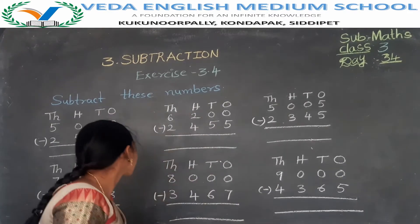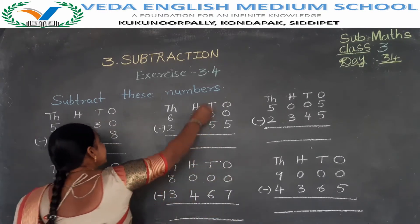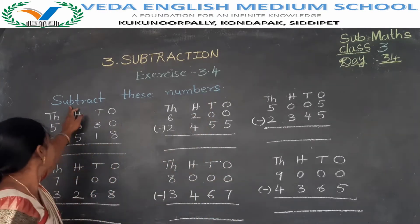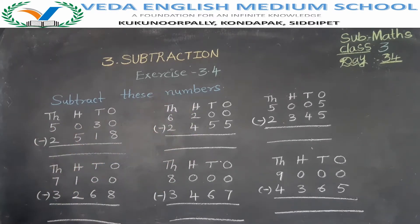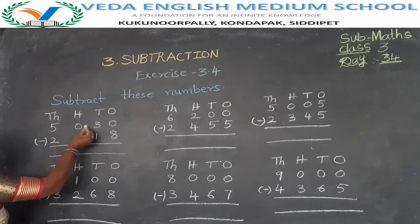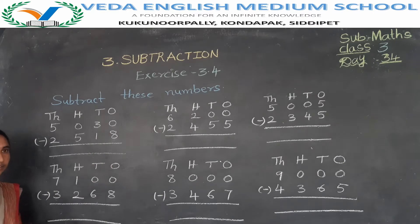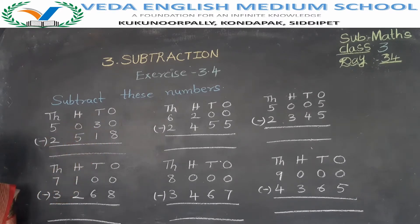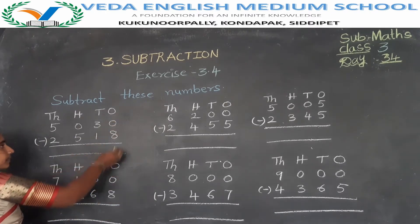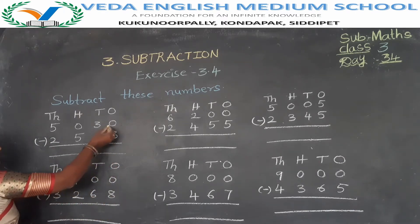Today we discuss about exercise 3.4. Subtract these numbers. First problem: 5030 minus 2518. Now subtract. First, look at the ones place.